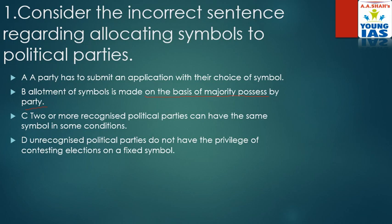Let's look at the next options. Two or more recognized political parties can have the same symbol under some conditions — obviously, if the political parties are from different states or UTs, they can have the same symbol. Unrecognized political parties do not have the privilege of contesting elections on a fixed symbol — they have to choose the symbol given by the Election Commission.